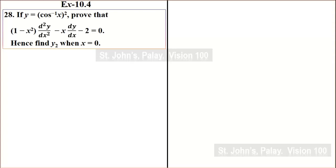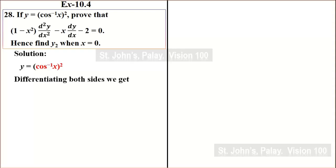Solution. y is equal to cos inverse x the whole square. If we differentiate, y1 is equal to 2 times cos inverse x, and cos inverse x differentiation is equal to minus 1 by root of 1 minus x square. So y1 equals 2 into cos inverse x into minus 1 by root of 1 minus x square.